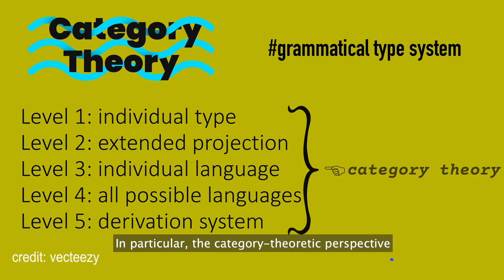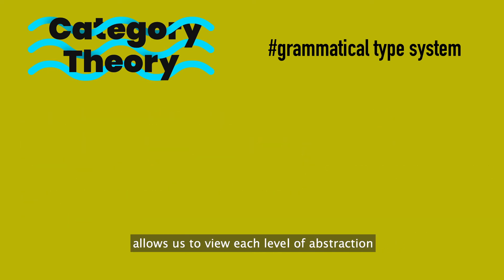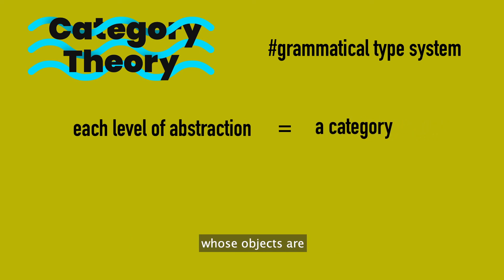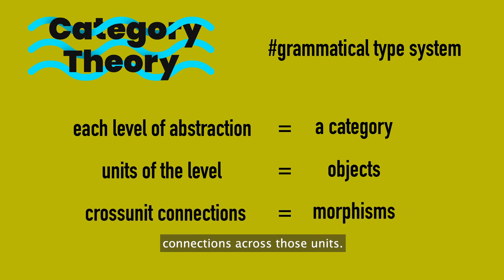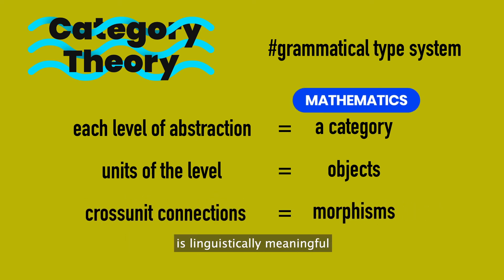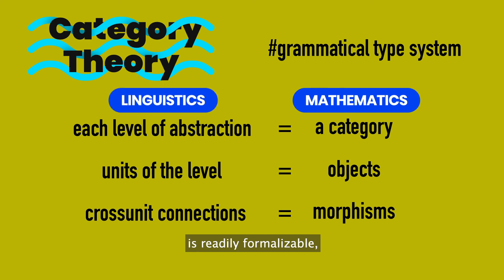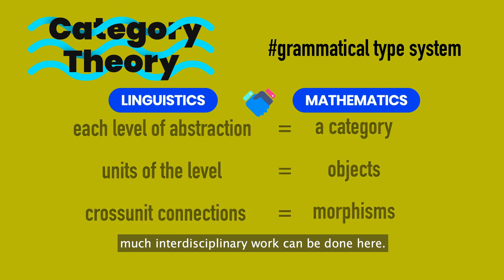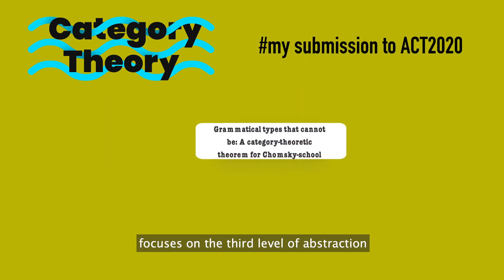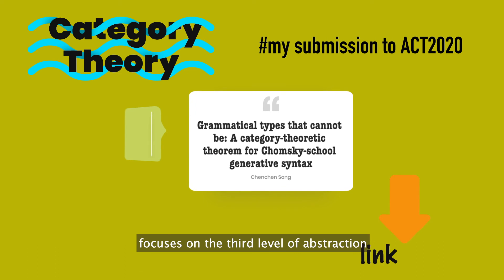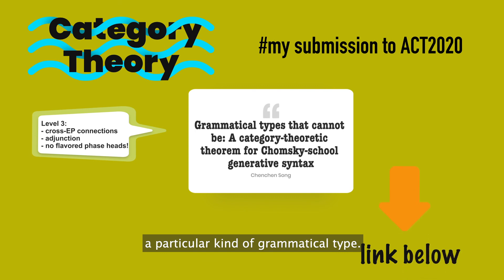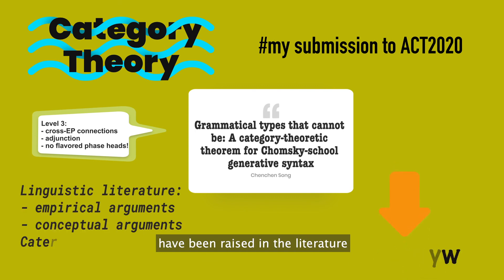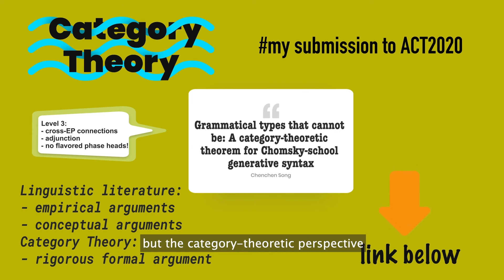In particular, the category theoretic perspective allows us to view each level of abstraction from the second level on as a category, whose objects are the structural units at that level and morphisms are connections across those units. Since not every mathematical configuration is linguistically meaningful, and not every linguistic idea is readily formalizable, much interdisciplinary work can be done here. For example, my submission to ACT 2020 focuses on the third level of abstraction and uses the category theoretic idea of a junction to rule out a particular kind of grammatical type. A few empirical and conceptual arguments have been raised in the literature against such grammatical types, but the category theoretic perspective offers a rigorous formal argument.